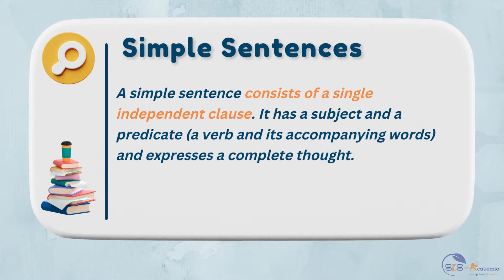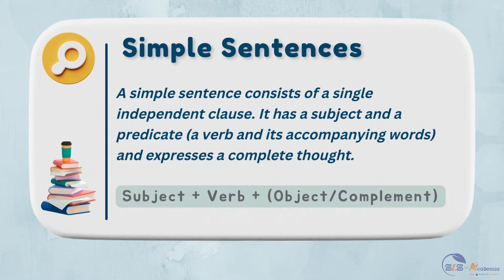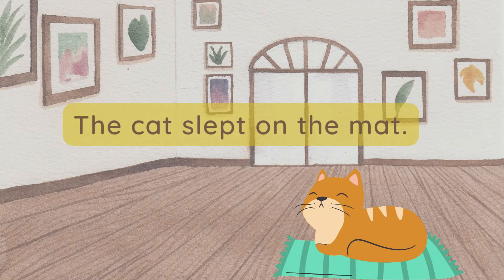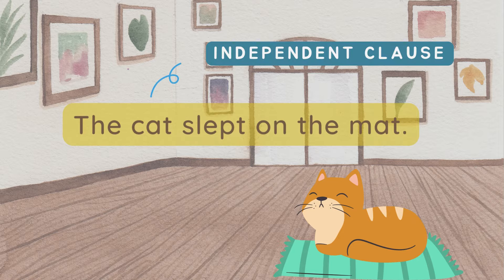A simple sentence consists of a single independent clause. It has a subject and a predicate and expresses a complete thought. Simple sentences can be short or long as long as they convey only one idea. Here's the basic structure of a simple sentence: subject plus verb plus object or a complement. For example, 'The cat slept on the mat.' This is a simple sentence because it contains one independent clause. Here, 'the cat' is the subject and 'slept' is the verb, and the sentence expresses a complete thought.